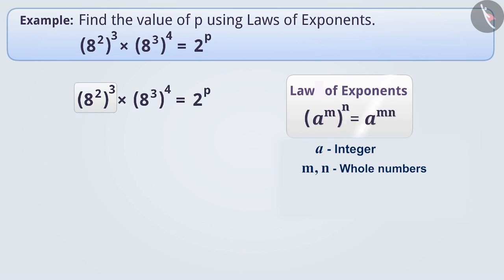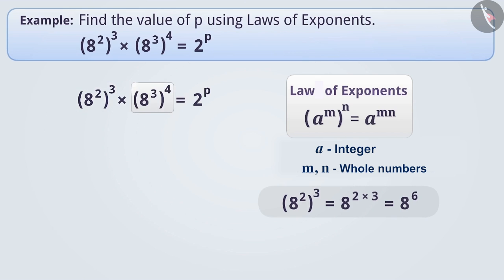Using this law, we can write 8 square to the power of 3 as 8 to the power of 2 × 3, which equals 8 to the power of 6. We can also simplify 8 cube to the power of 4 using the same law: 8 cube to the power of 4 equals 8 to the power of 3 × 4, which equals 8 to the power of 12.